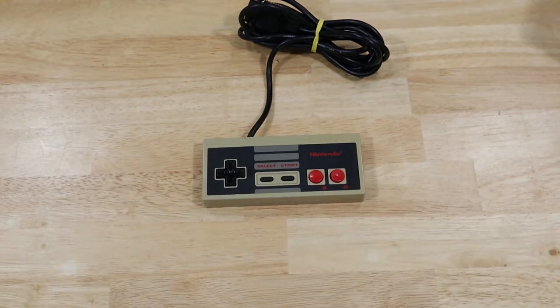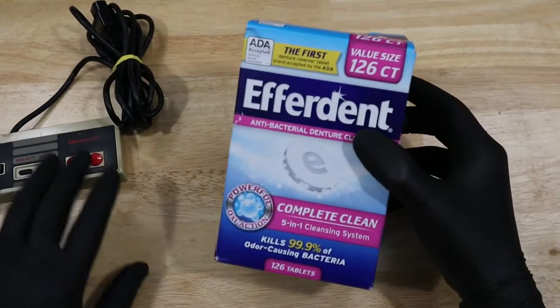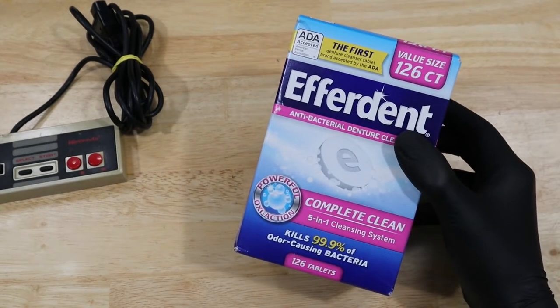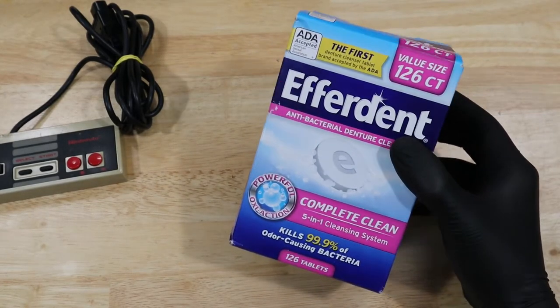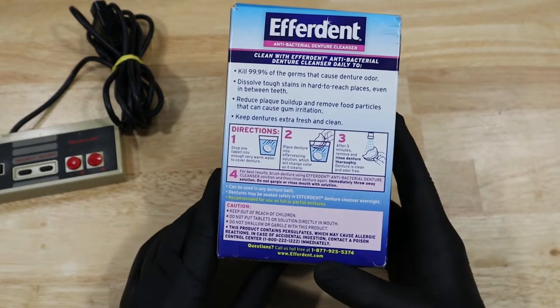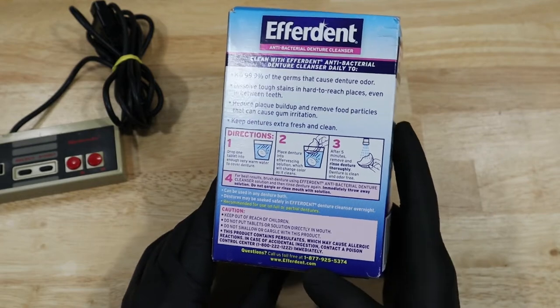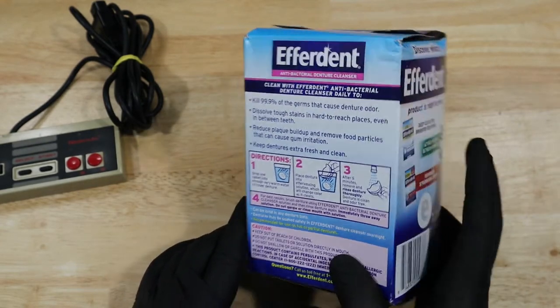Denture tablets. The theory here is that denture tablets can release some hydrogen peroxide when they dissolve, and hydrogen peroxide retrobrites things, so clearly denture tablets can also retrobrite things. I'm not so sure about this one, but let's give it a test anyways.